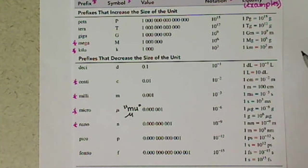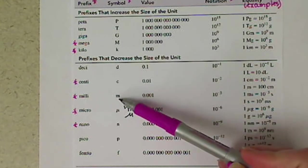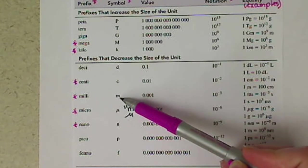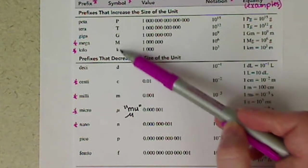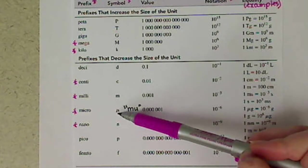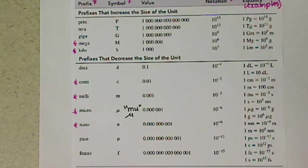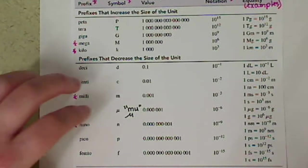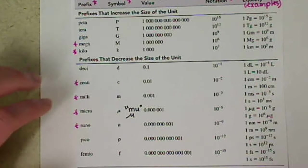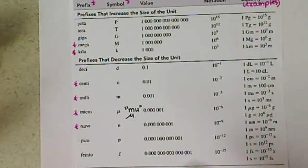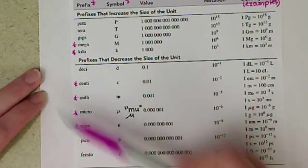So basically the starred things are what you're going to want to memorize. One thing to point out is M is a very common symbol used in chemistry. The mega is a capital M versus milli is a lowercase m. So you want to make sure you keep those very, very distinct. And then the mu looks like an M, so keep that in mind as well. So that's kind of our intro to the metric system. We're going to use the metric system so that we can convert between, say, our base unit and some sort of unit using these prefixes.